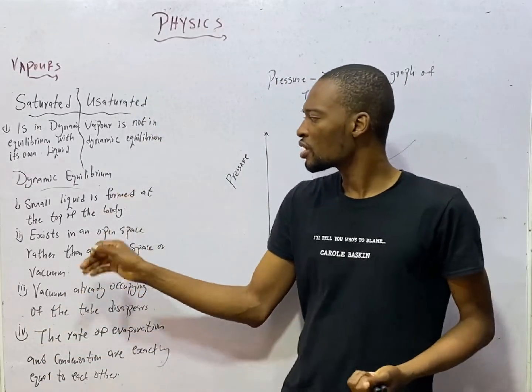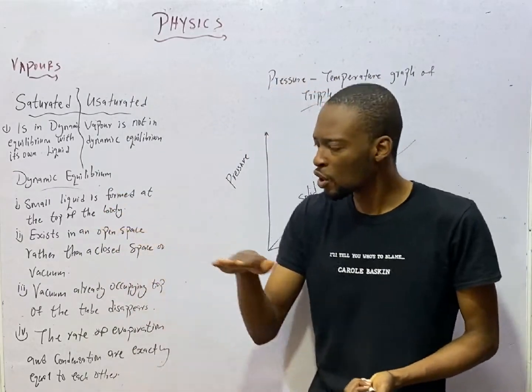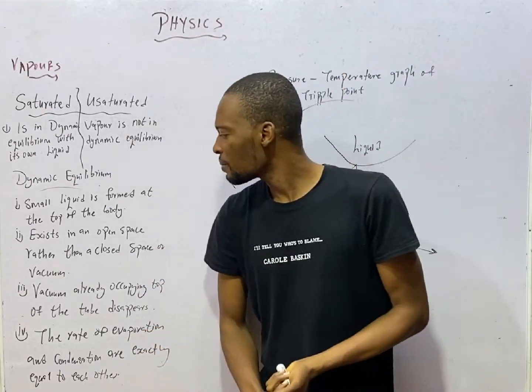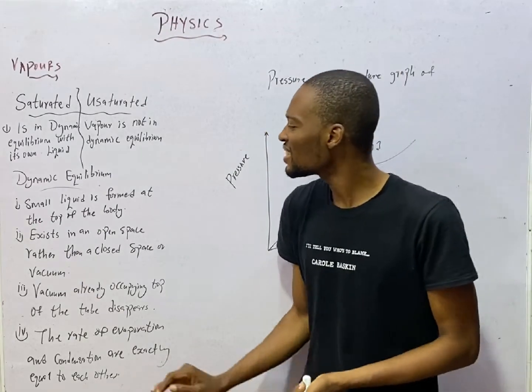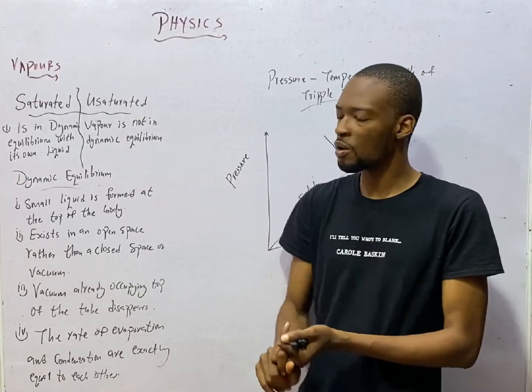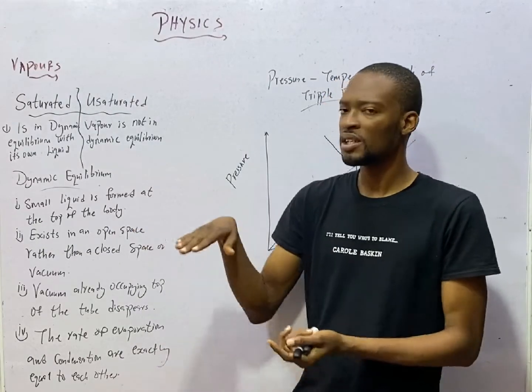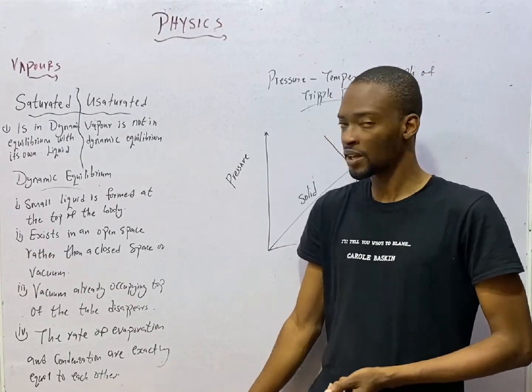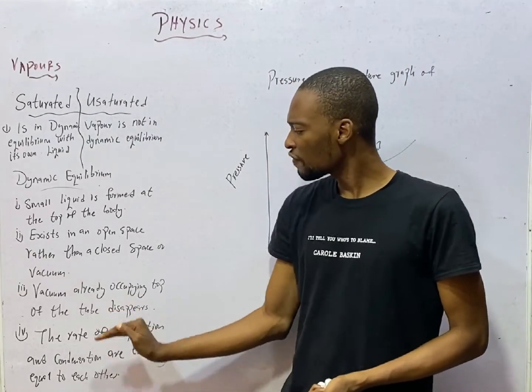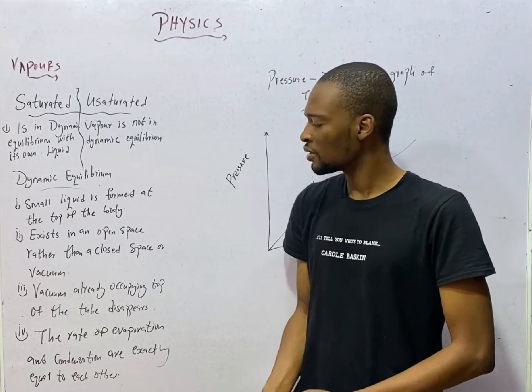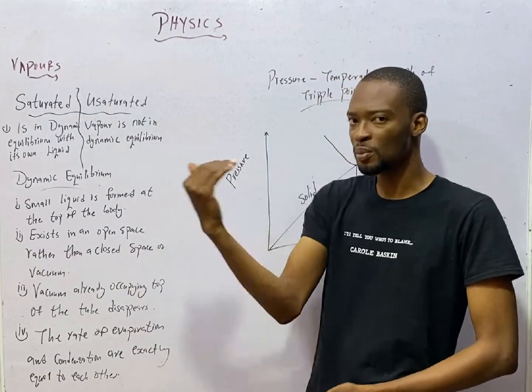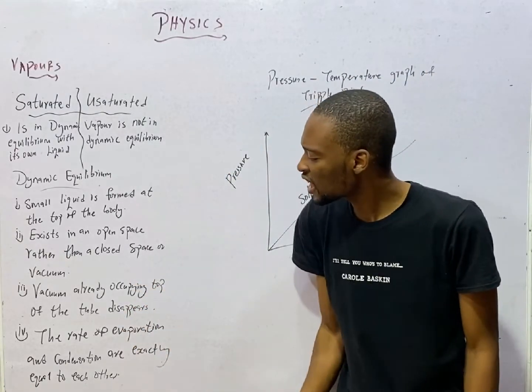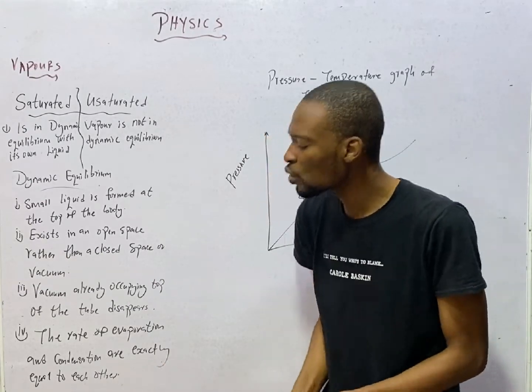Similarly, in dynamic equilibrium for vapors, small liquid is formed at the top of the body. That is one. This is an examination point. Two, a dynamic equilibrium exists in an open space rather than a closed space vacuum. For there to be dynamic equilibrium, there should be an open space rather than a vacuum. And the vacuum already occupying top of the tube disappears. And four, dynamic equilibrium is the rate at which evaporation and condensation are exactly equal to each other.